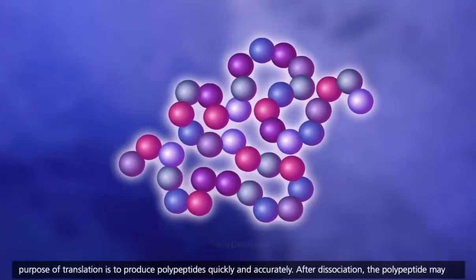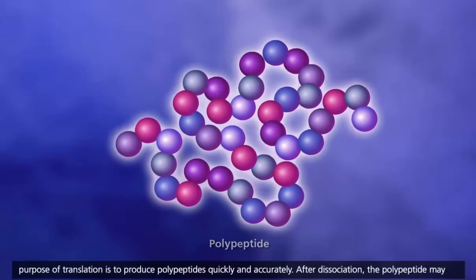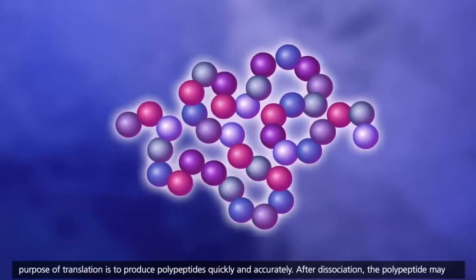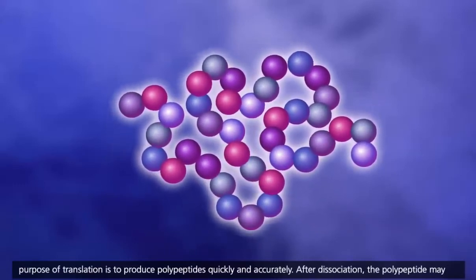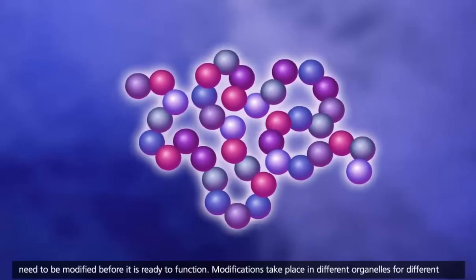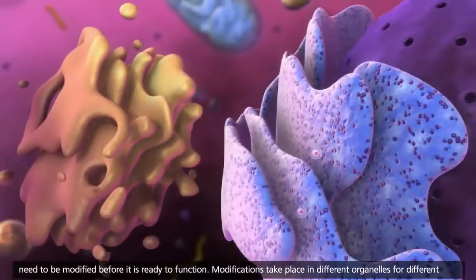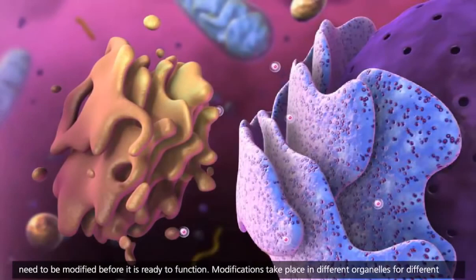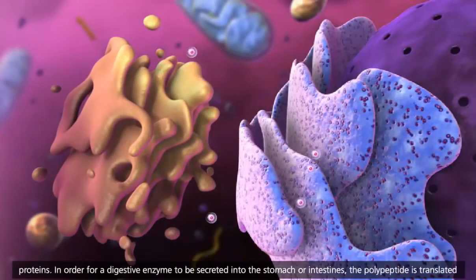The purpose of translation is to produce polypeptides quickly and accurately. After dissociation, the polypeptide may need to be modified before it is ready to function. Modifications take place in different organelles for different proteins.